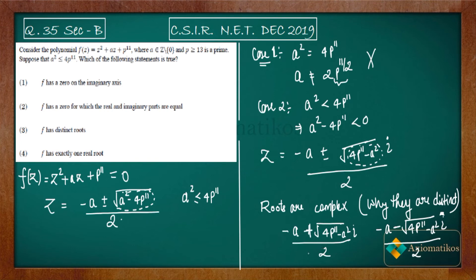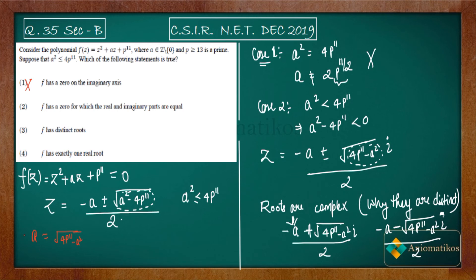Now the problem lies with the options. Option one says f has a zero on the imaginary axis. A root lies on the imaginary axis only when its real part is zero. But the real part here is −a/2, and since a is a non-zero integer, the real part cannot be zero. So option one is incorrect. Option two says f has a zero for which the real and imaginary parts are equal. For that, we would need a = √(4p¹¹ − a²).